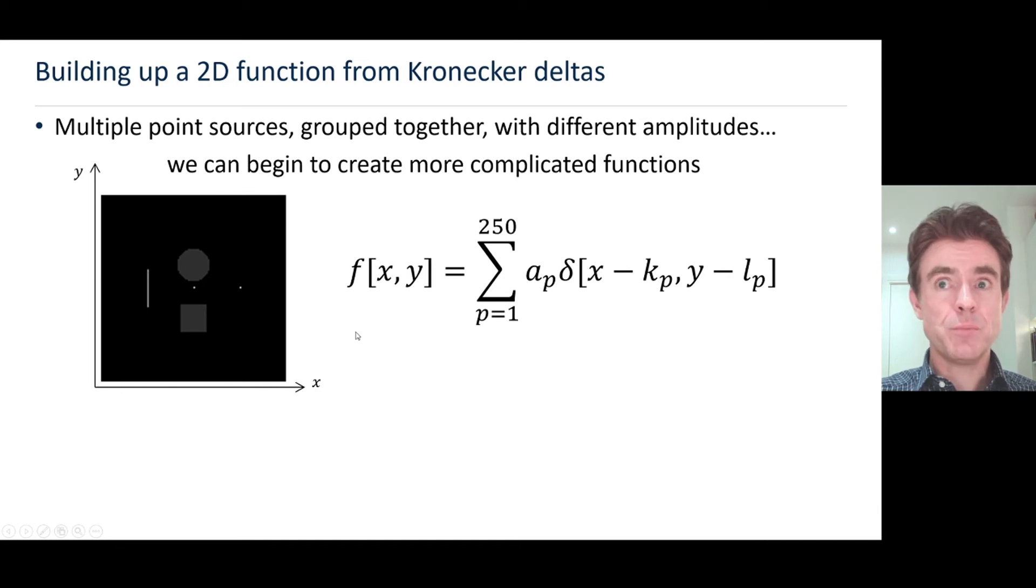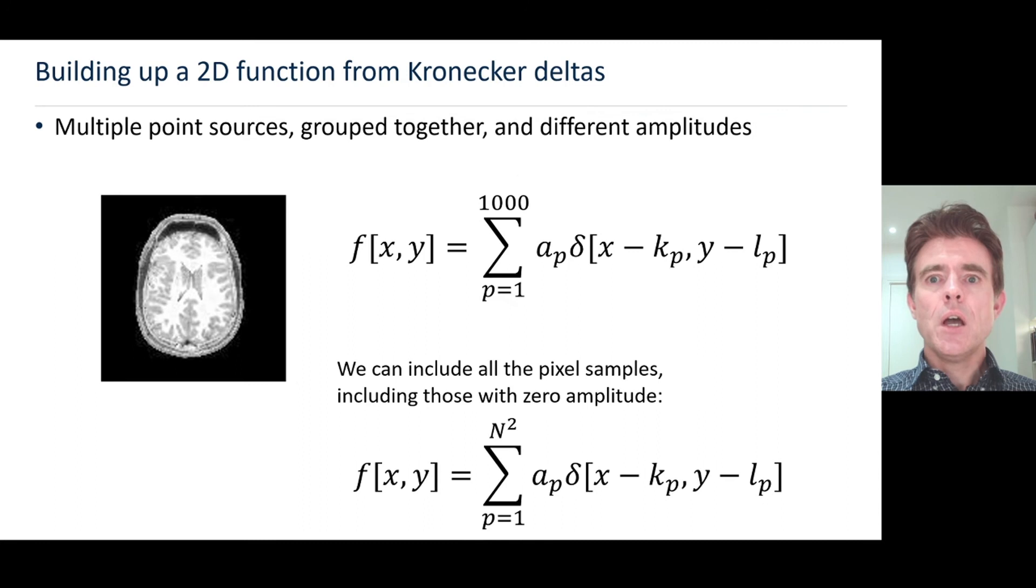Again we can build complexity. Now I've got a more general looking cross-section of a brain there, just a collection of point sources of different amplitudes. Here I'm just guessing that there may be a thousand pixels here, so I'm just crudely representing that here saying we've got a thousand point sources each of a unique amplitude ap.